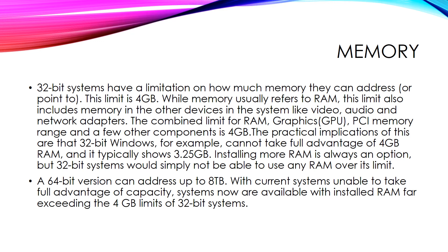The practical implication is that 32-bit Windows cannot take full advantage of 4 GB of RAM. Installing more RAM is always an option, but 32-bit systems simply cannot use any RAM over this limit. A 64-bit version can address up to 8 TB, and systems are now available with installed RAM far exceeding the 4 GB limit of 32-bit systems.